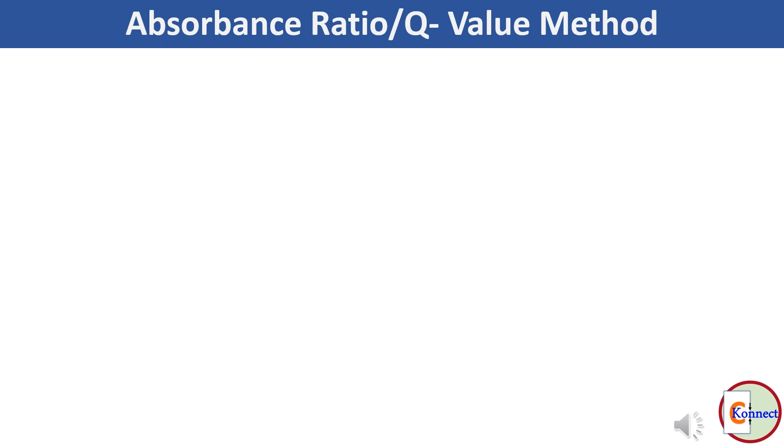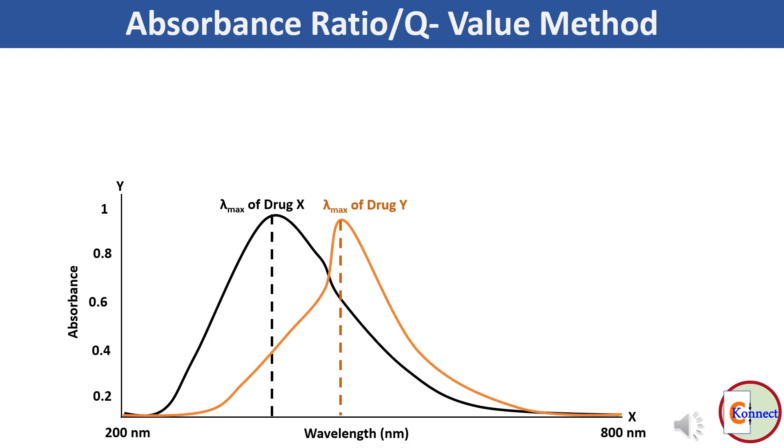Each of two absorbing drugs, for example drug X and drug Y, should have some absorbance at lambda max of the other one and overlay of the spectra must show an isoabsorptive point.